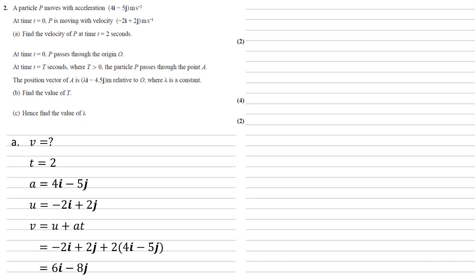At time t equals zero, p passes through the origin O. At time t equals t seconds, where t is larger than zero, the particle p passes through the point A. The position vector of A is lambda i minus 4.5j meters relative to O, where lambda is a constant. For part b, we need to find the value of t.